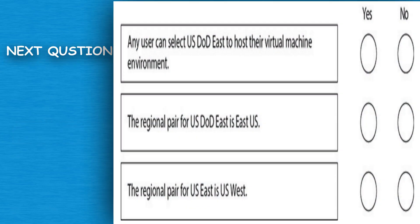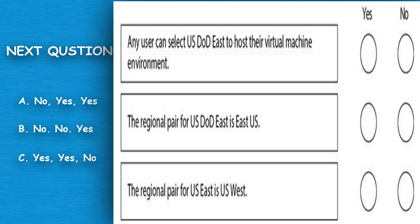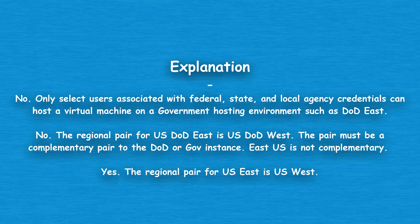The next question asks you to answer yes or no to three questions. The correct answer is Option B: No, No, Yes. No — only select users associated with federal, state, and local agency credentials can host a virtual machine on a government hosting environment such as DoD East. No — the regional pair for U.S. DoD East is U.S. DoD West; the pair must be a complementary DoD or Gov instance, and East U.S. is not complementary. Yes — the regional pair for U.S. East is U.S. West.